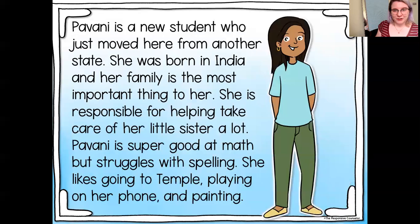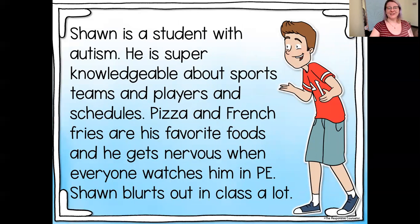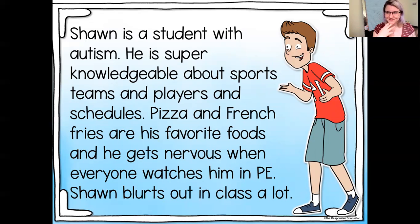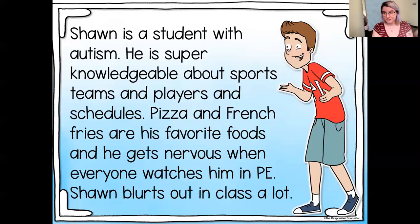The last person I would like you to write about is our buddy Sean. Sean is a student with autism. He is super knowledgeable about sports teams and players and schedules. Pizza and French fries are his favorite foods. He gets nervous when everyone watches him in PE, and Sean blurts out in class a lot. Take some time and write down one difference and one similarity that you have with Sean. If you need to reread any of those three passages, you may use the bar at the bottom of the video to move to the part you need to see again. If you need more time to write these down, take it before coming to Zoom. When you are done, go ahead and log in to Zoom and we're going to continue our conversation about diversity.